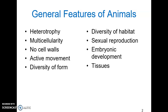One trait that applies to all animals is heterotrophy — animals all consume organic molecules that are produced by others. In this way, they are similar to the fungi. All animals are also multicellular, composed of more than one cell, and many have a wide array of complex bodies. Animals all lack cell walls, so they have a flexible cell membrane and an extracellular matrix of protein and cell connections that hold them together.